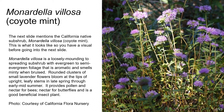Monodella villosa is a loosely mounding to spreading subshrub with evergreen to semi-evergreen foliage that is aromatic and smells minty when bruised. Rounded clusters of small lavender flowers bloom at the tips of upright leafy stems in late spring through early mid-summer. It provides pollen and nectar for bees, nectar for butterflies, and is a great beneficial insect plant.